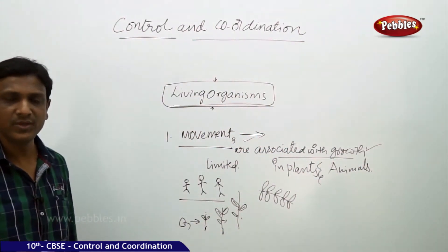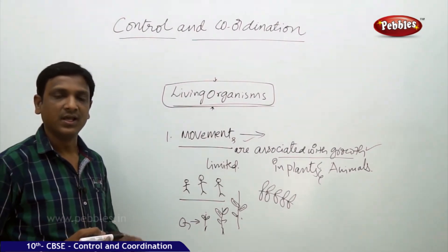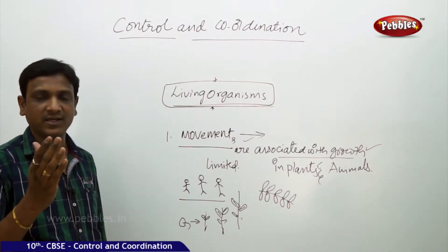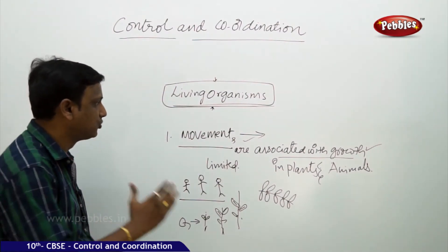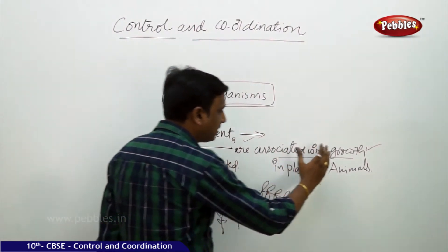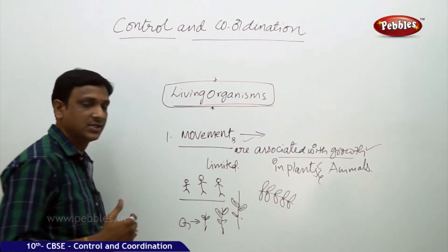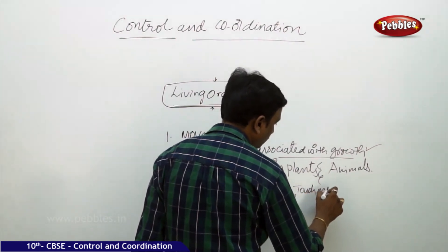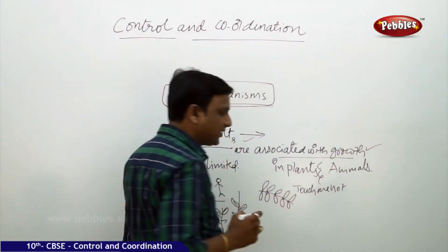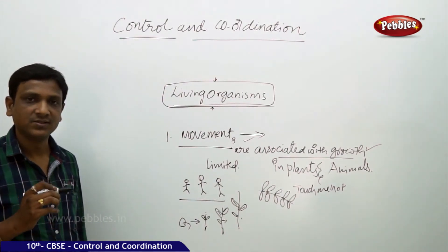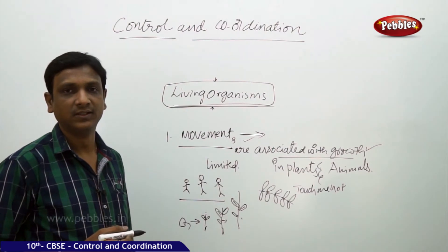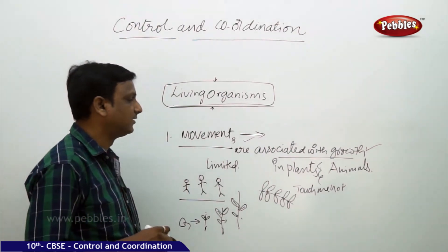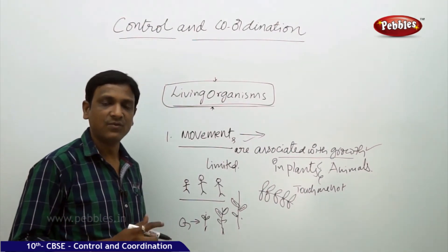We cannot say that movements are always associated with growth in plants and animals. In most cases we observe in plants the movements are associated with growth — for example, stems growing towards sunlight. But if you see the touch-me-not plant, touching the leaves causes them to droop, with no growth involved. So movements are not always associated with growth.